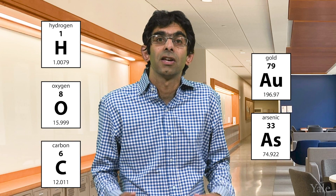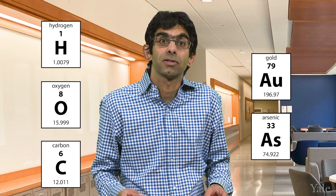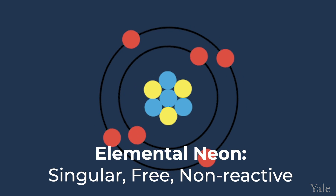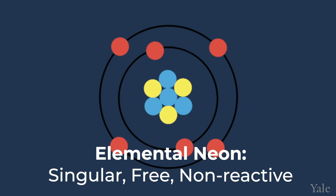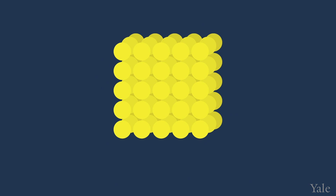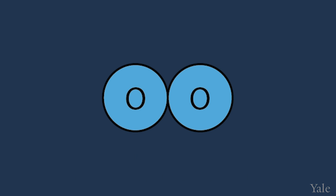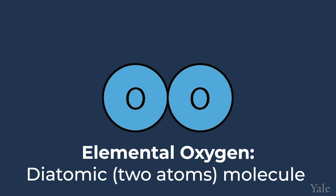Hydrogen, oxygen, carbon, gold, and arsenic are all different elements. When you have a sample of an element, it can consist of one or more atoms. Elemental neon exists as a singular free atom which does not interact with any other atoms. Elemental gold usually exists as millions or trillions of connected atoms.